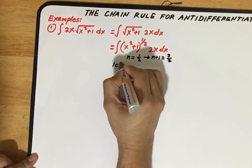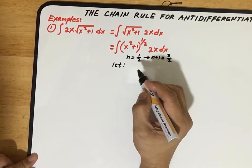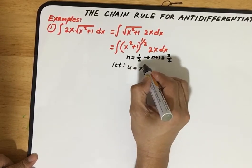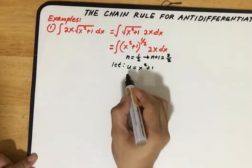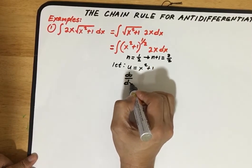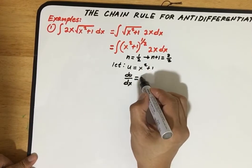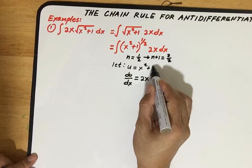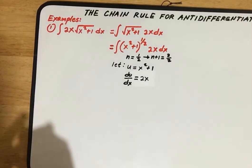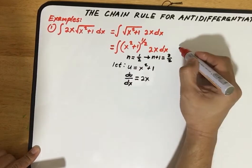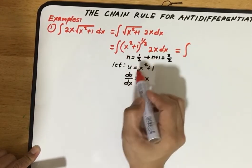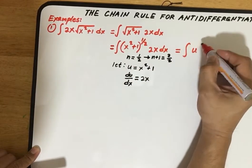Now we will use another variable to represent part of the expression. We let u be equal to x squared plus 1. From this, we find the derivative of u with respect to x, which equals 2x — since the derivative of x squared is 2x and the derivative of the constant 1 is 0. Our goal is to replace the expression in u, so we rewrite the integral as u raised to the power 1/2.